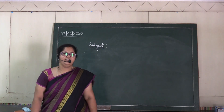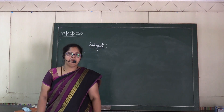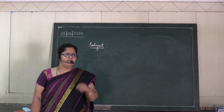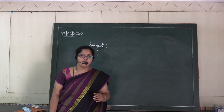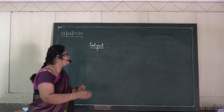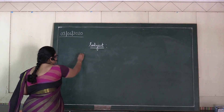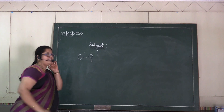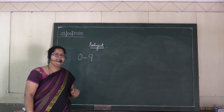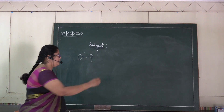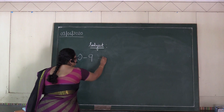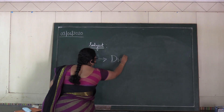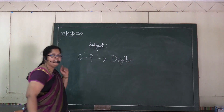Hello, children. It's math time. Let's do a quick recap of what things you have learned. Zero to nine — what are these? Very good. These are digits.